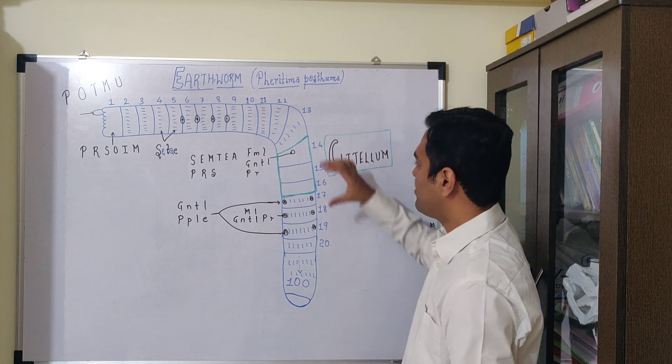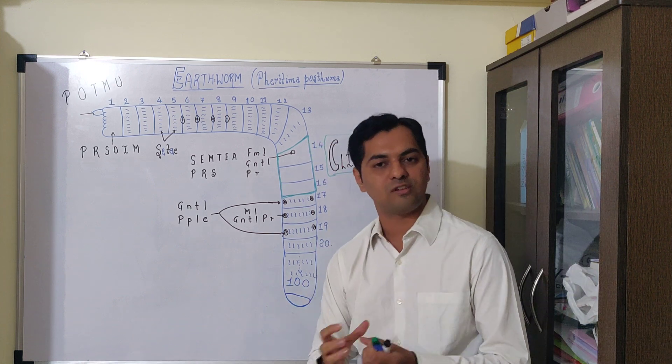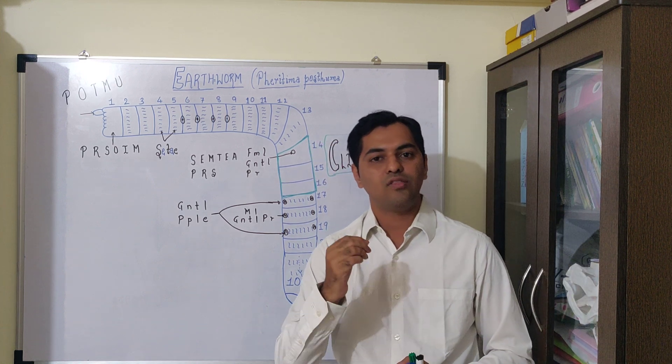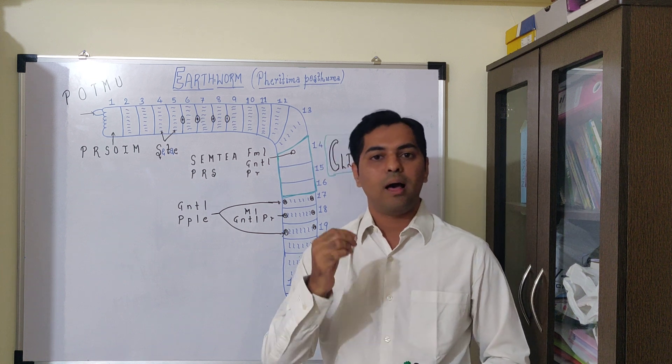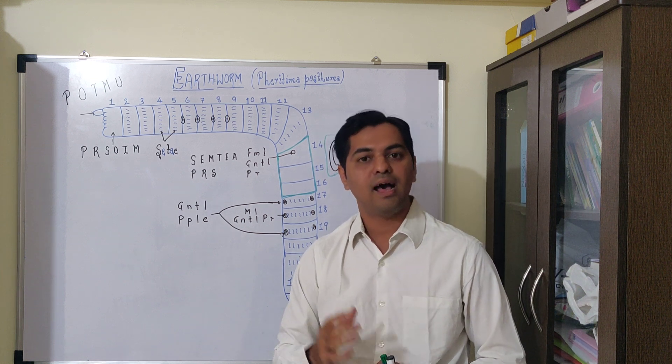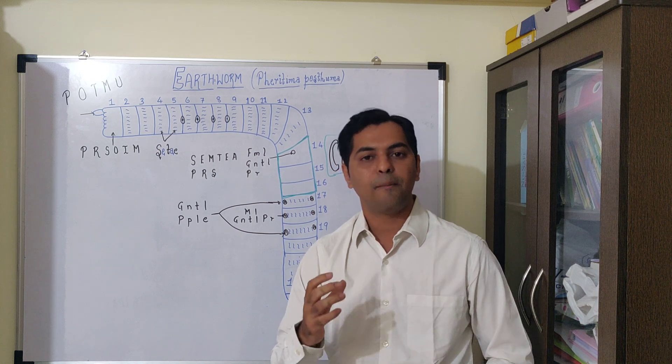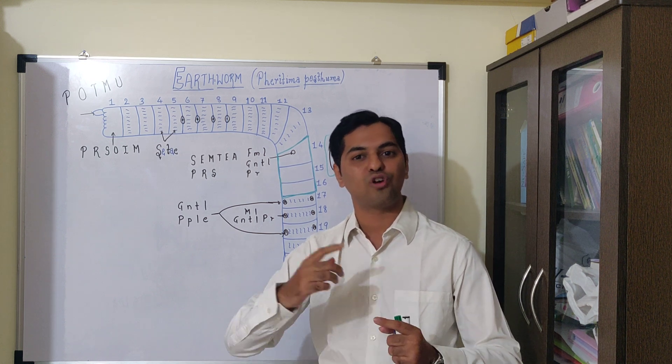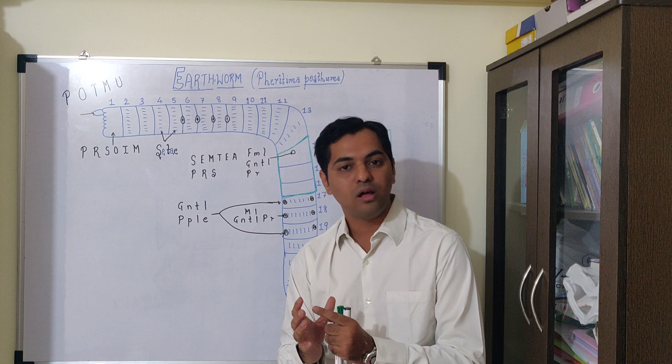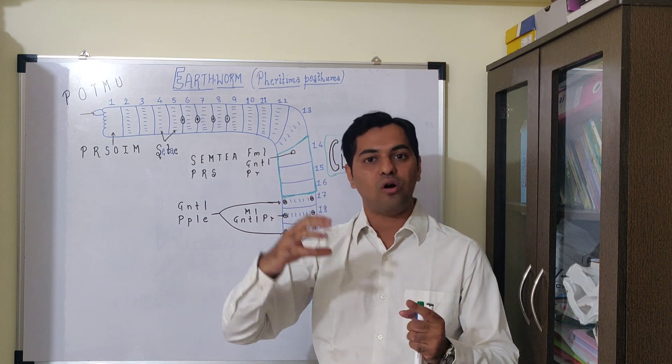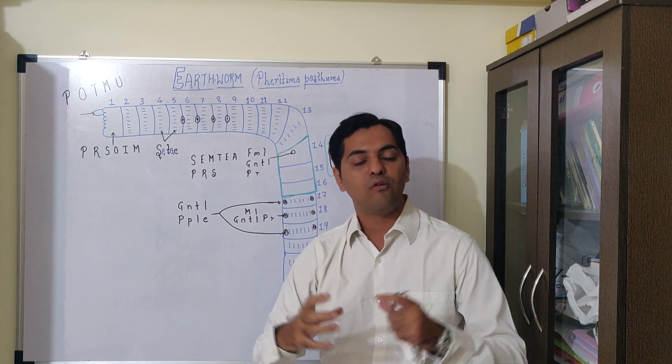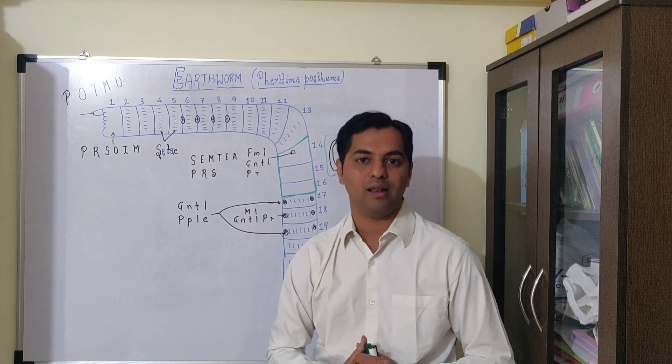The clitellum extending from 14th to 16th segment secretes mainly mucus and albumin. These secretions help in the formation of cocoon, where sperm and ova fuse to undergo fertilization.